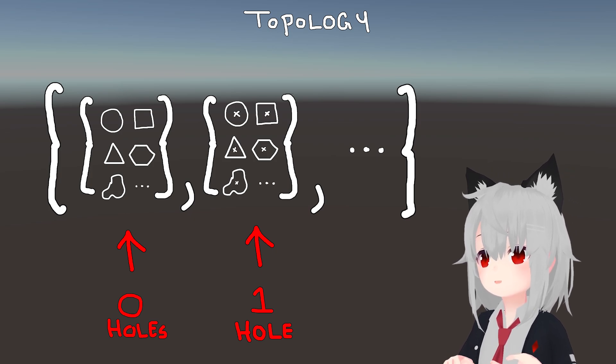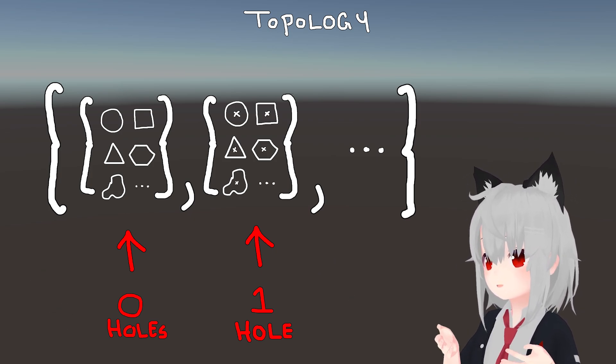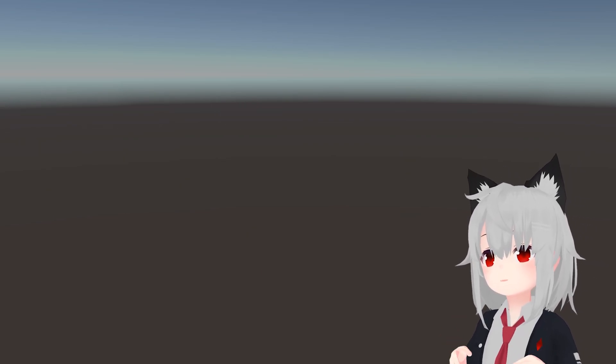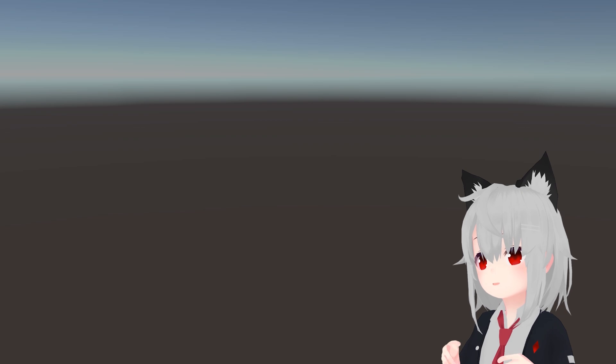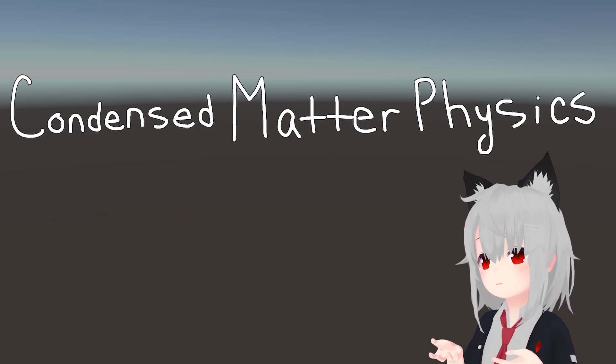For this reason, you're free to think either in terms of the topological invariant itself, or equivalently in terms of the shapes that it represents. Okay, so this is pretty cool, but what does it have to do with physics? Well, remember that we're talking about condensed matter physics, not just physics generally.